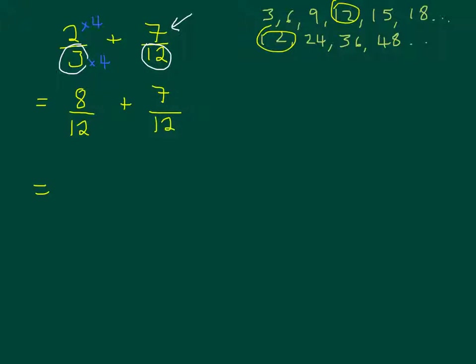Plus 7 over 12. I keep the denominator the same — 12 — and 8 plus 7 is 15, so my answer is 15 over 12. However, I can simplify this. I'm looking for the highest common factor — the highest number that goes into both 15 and 12 — and that is 3. So I'm going to divide the numerator by 3 and the denominator by 3: 15 divided by 3 is 5, 12 divided by 3 is 4, giving 5 over 4.